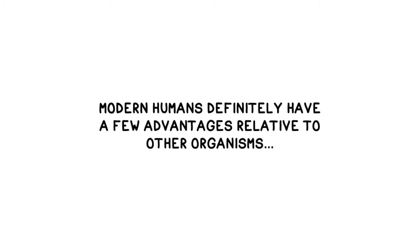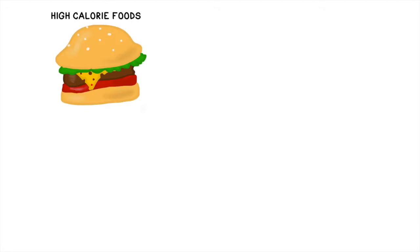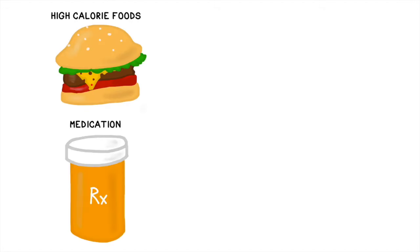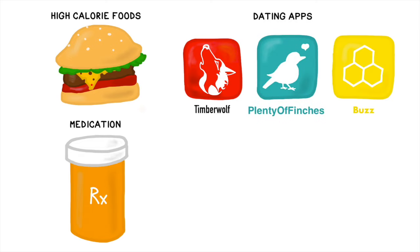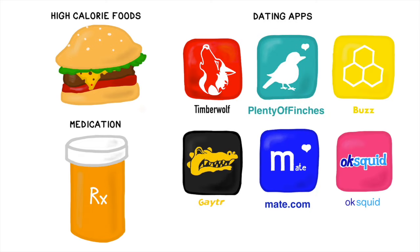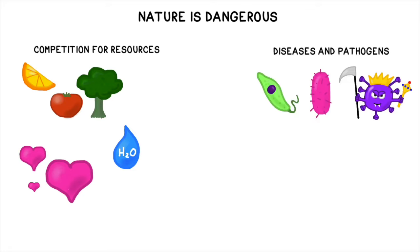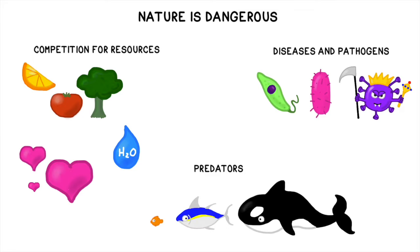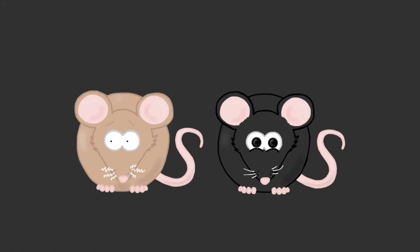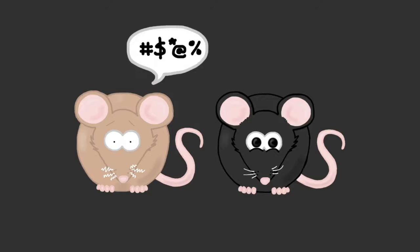Still, when it comes to achieving biological fitness, we humans have a fair amount of help from grocery stores full of high calorie food, modern medicine, and dating apps. Organisms in nature generally do not have these advantages. Nature is a very dangerous place. Competition for resources like food, water, and mates is fierce. Diseases and pathogens are rampant, and predators are everywhere. Certain traits can mean the difference between surviving long enough to reproduce and becoming someone's mid-afternoon snack.